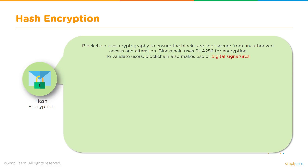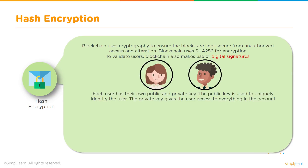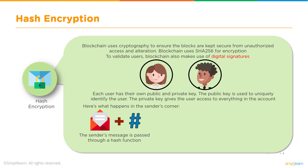Blockchain uses cryptography to ensure blocks are kept secure from unauthorized access and alteration. Blockchain uses the SHA-256 encryption algorithm for encryption. To validate users, blockchain also makes use of digital signatures. Whenever a user onboards a blockchain network, they generate their own public and private key pair. The public key is used to uniquely identify the user, and the private key gives the user access to everything in their account.